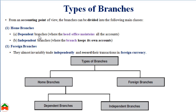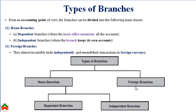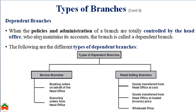Dependent branches are controlled by the head office and everything is decided by the head office for the dependent branch. On the other hand, independent branches keep their own accounting based on the judgment of the branch manager. Foreign branches are generally situated in a foreign country and independently record transactions based on foreign currency. Broadly there are two types of branches: home branches and foreign branches, and home branches are further divided into dependent and independent branches.